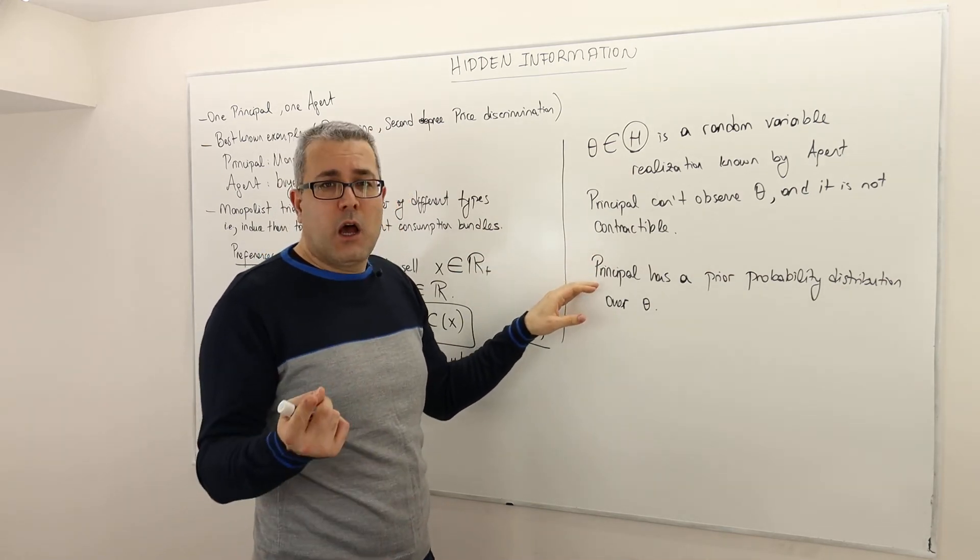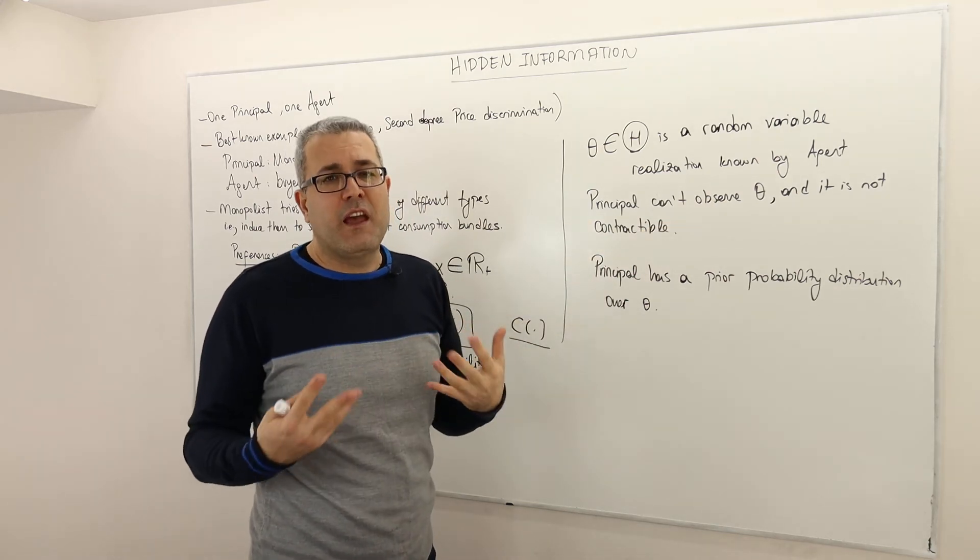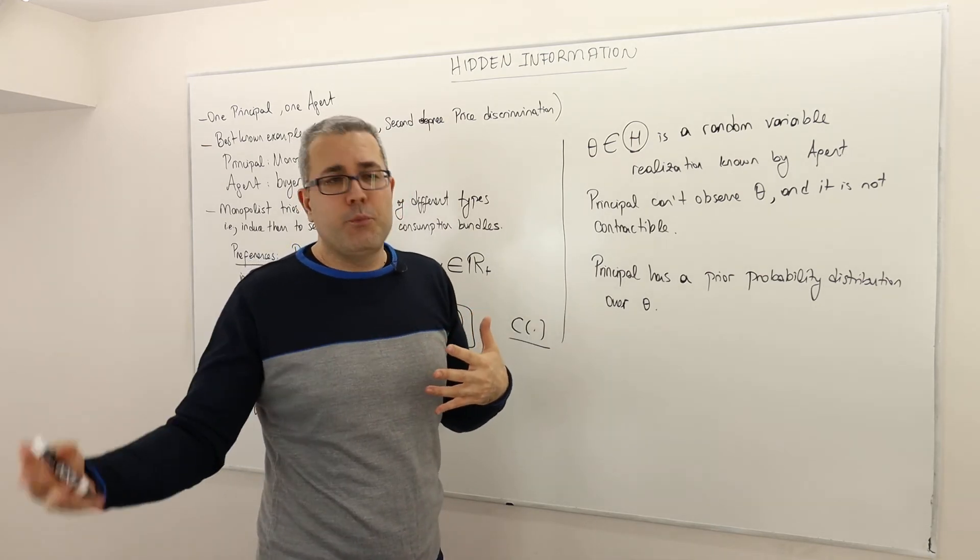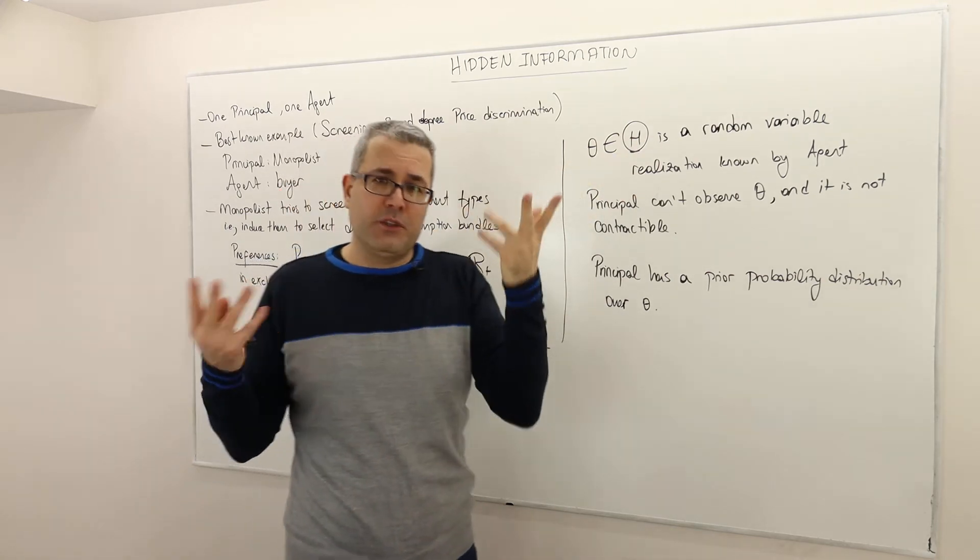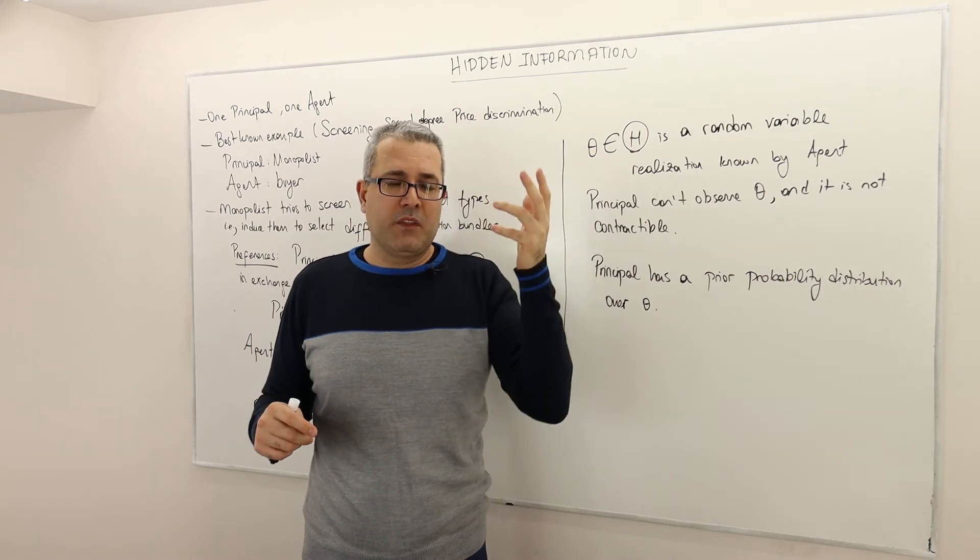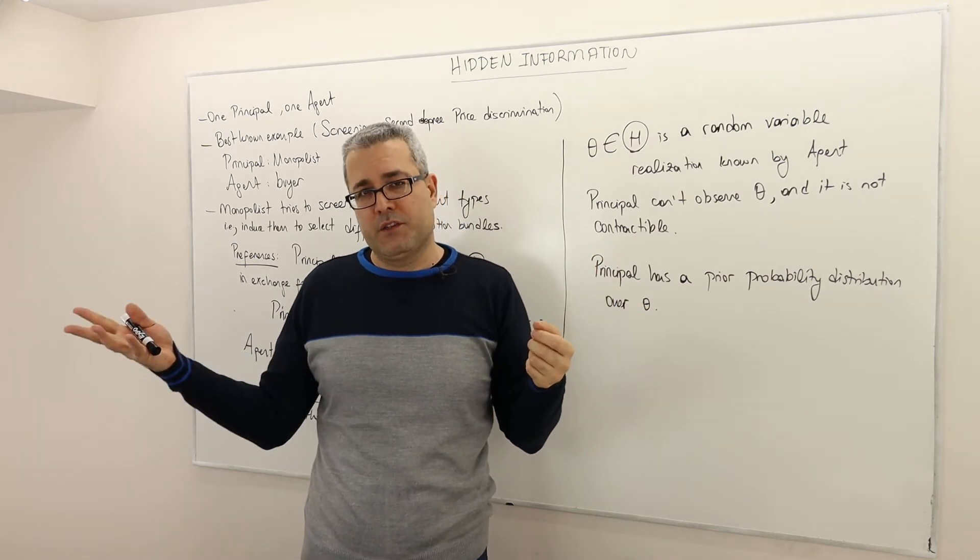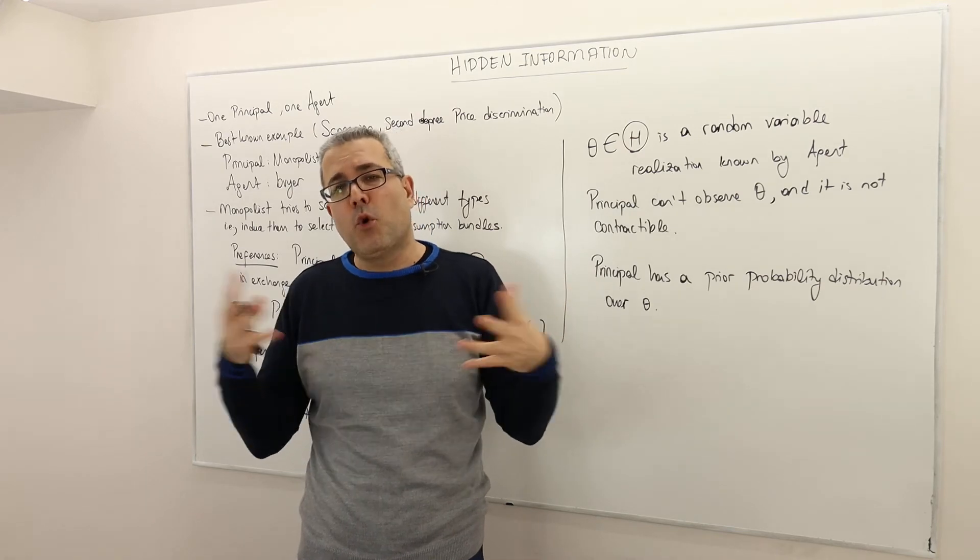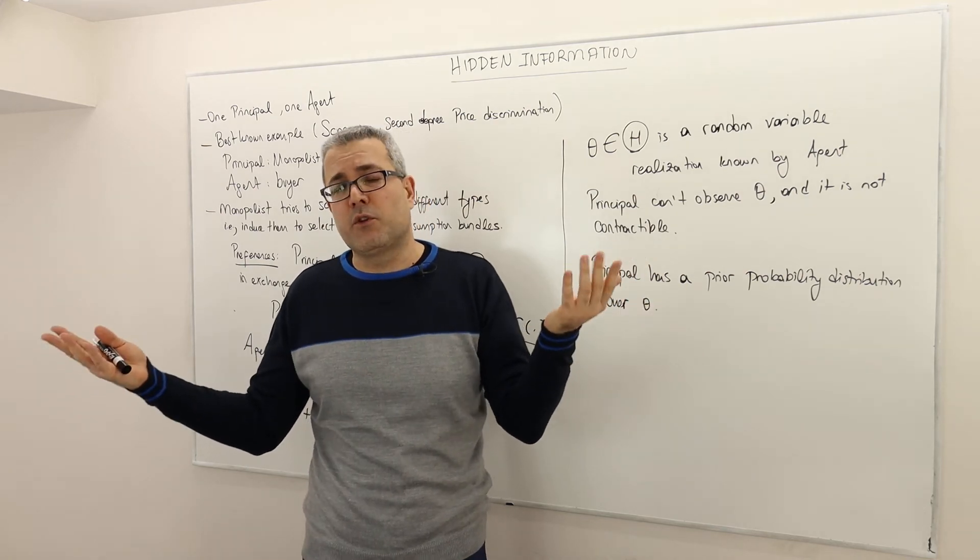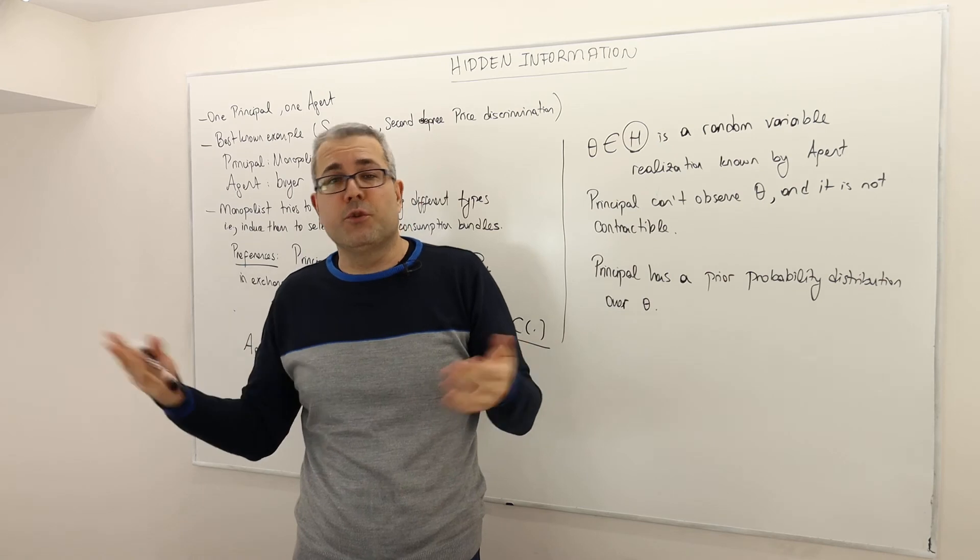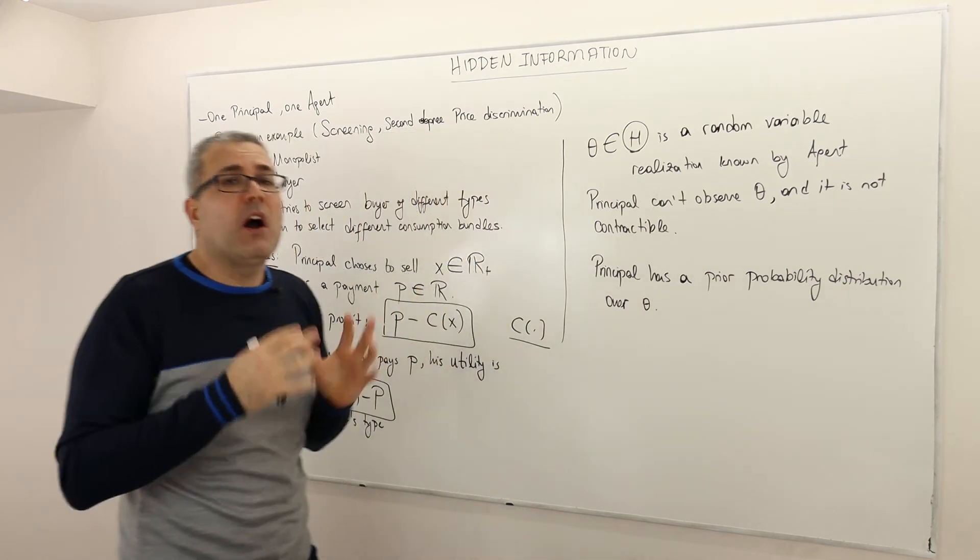The principal, although he doesn't know the true value of theta, he has a prior belief about what theta might be, or a prior distribution, a probability distribution over theta. So if it is two types, for example, you can assume that the monopolist believes that the customer has low willingness to pay with some probability P and high willingness to pay with probability one minus P. If it is more than two types, for example, continuous number of types, for example, the types are distributed over a 0 to 1 interval, maybe it's a uniform distribution. So some probability distribution. The principal has this prior belief. It's part of the model.